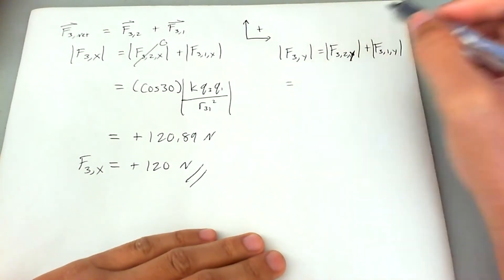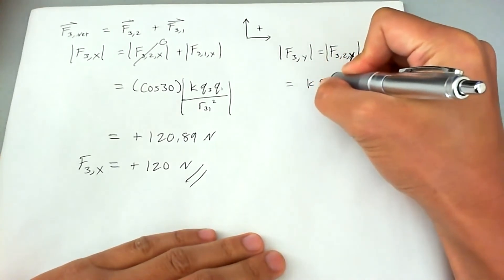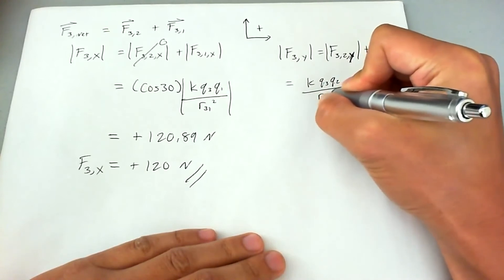So we're going to go ahead and do the k q3 q2 over r32 squared.